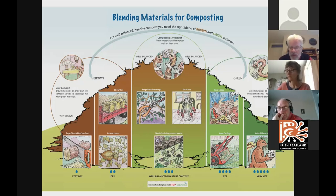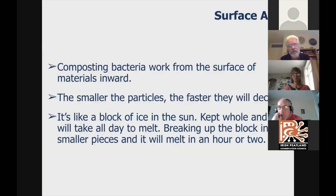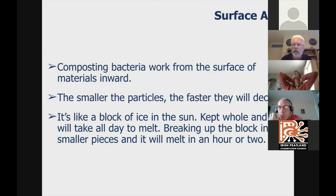You might ask how we do that when the leaves come in autumn and winter and the grass cuttings come in spring and summer. I'll answer that in a minute. The composting bacteria work from the surface inward — the smaller the particles, the faster they'll decay. The more surface area we have, the faster the materials will decay and the faster we'll make compost.